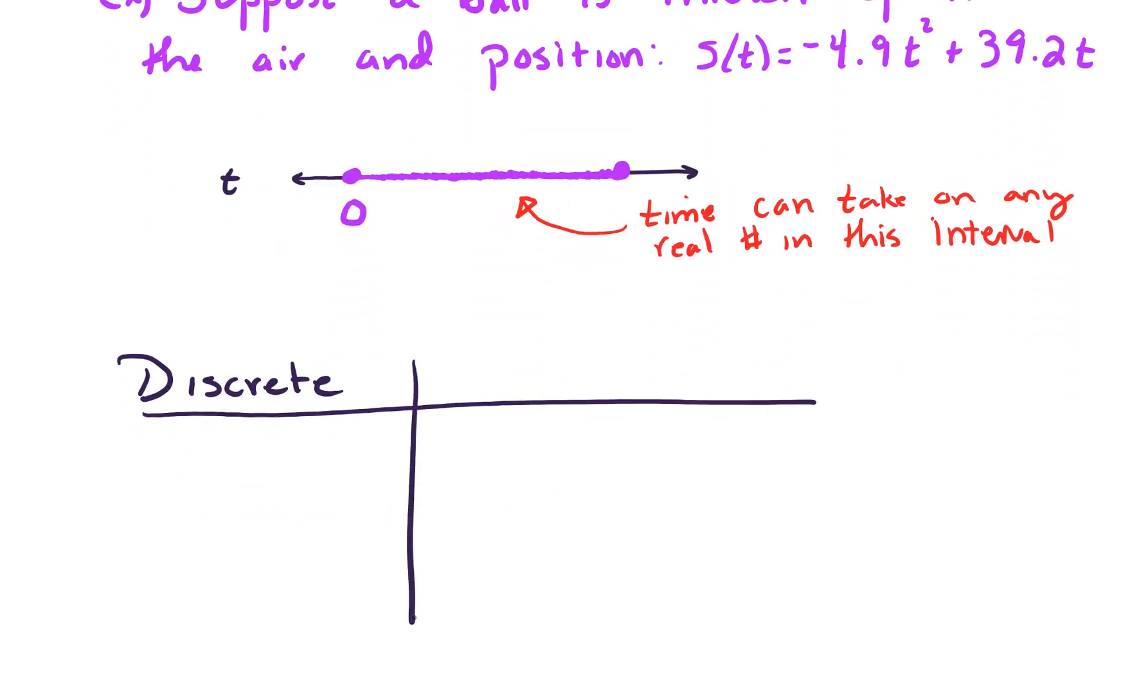When we're working with discrete-time models, our tools are sometimes called difference equations or recurrence equations. You'll often see these called iterative maps if the rule doesn't depend on time. For continuous models, these are the tools of calculus and differential equations, derivatives, things like that.